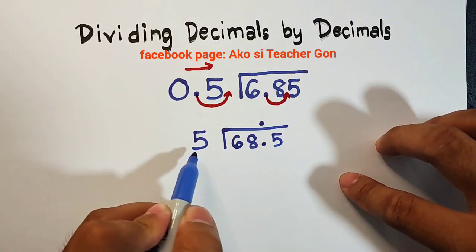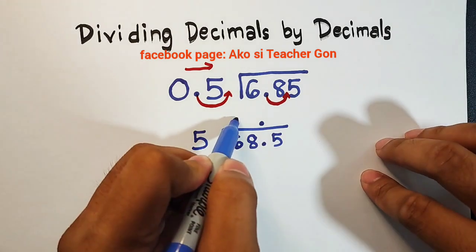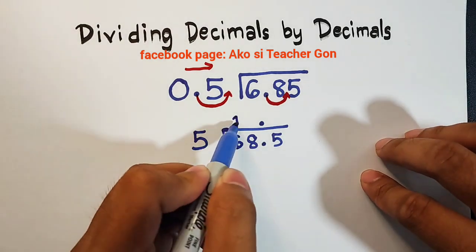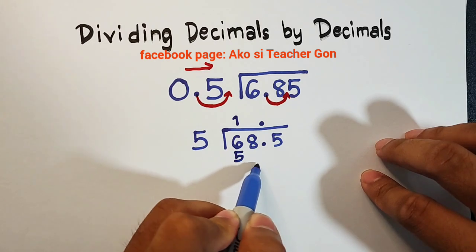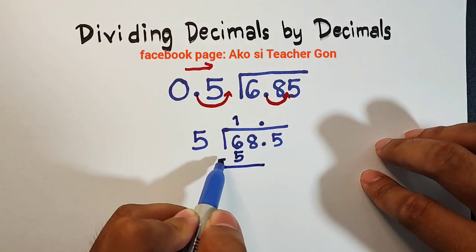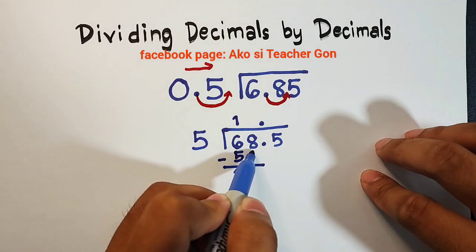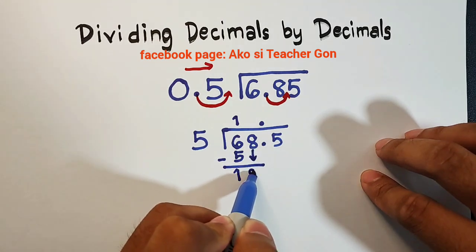For this one, we have 6 divided by 5, we have 1. 1 times 5 that is equal to 5. And we will subtract. 6 minus 5 is equal to 1. And you need to bring down 8.